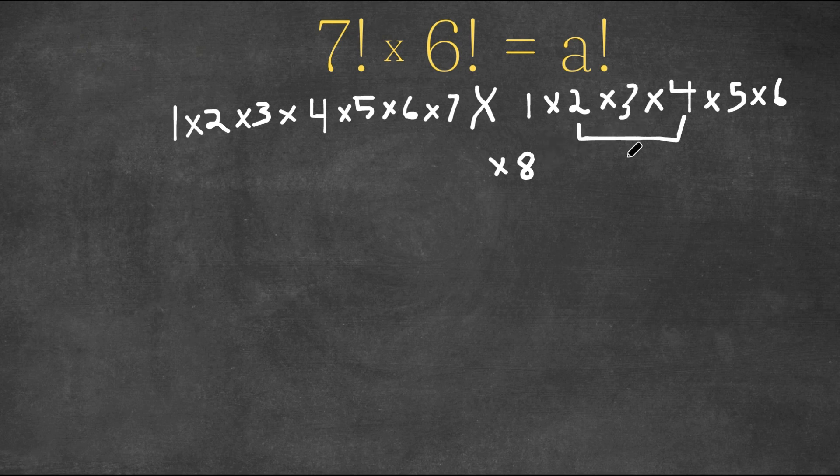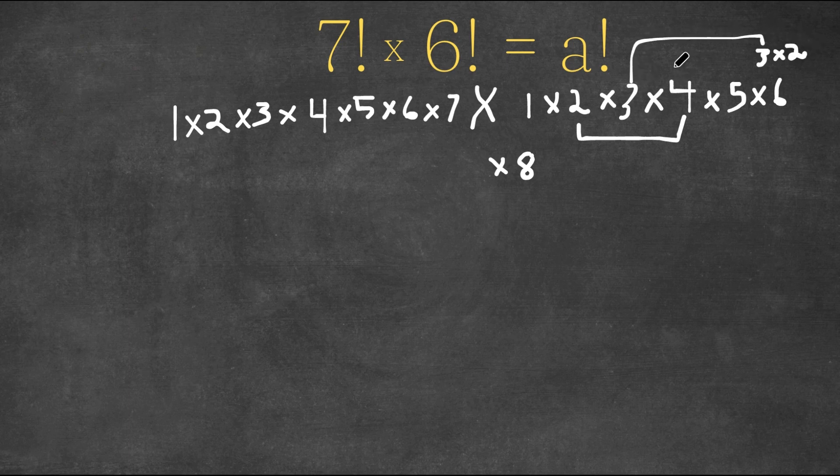Now, how would we get 9? Well, 9 is 3 times 3, right? As you can see, we already have one 3 over here, but we're missing another 3. We could actually rewrite 6 as 3 times 2. Now we can get our 3 from here and multiply these two. 3 times 3 is 9, so we have 8 times 9.